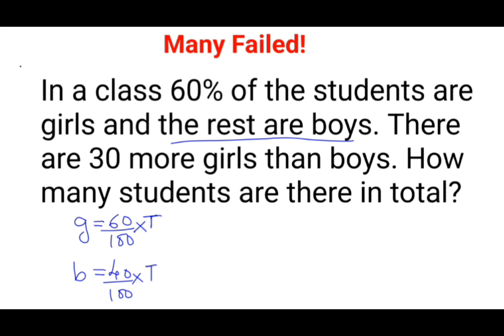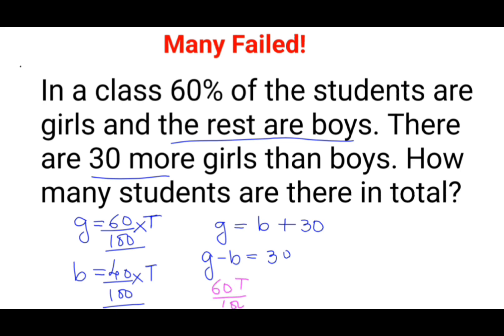They are saying there are 30 more girls than boys, meaning girls equals boys plus 30. So shifting boys to this side, we get G minus B equals 30. Now instead of G and B I can write these values, since both are in terms of T. So instead of girls I write 60 upon 100 into T, giving us 60T upon 100 minus 40T upon 100, which equals 30.